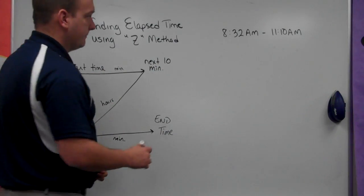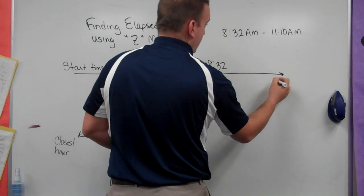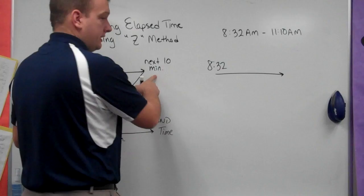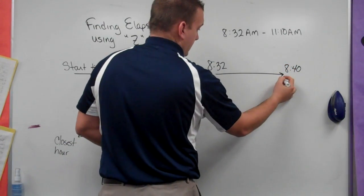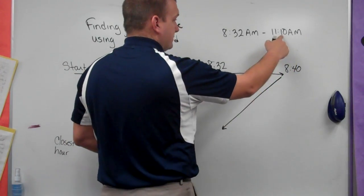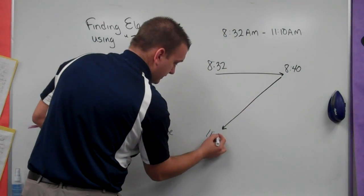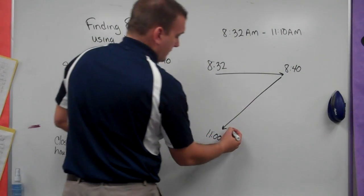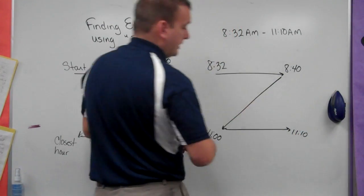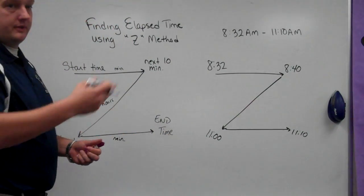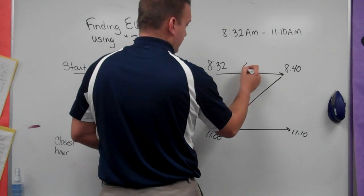Let's look at this example here. My start time is 8:32 a.m., and I'm going to go to the next 10 minute mark. That would be 8:40. Then, I come down. The next closest hour to my finishing time is 11 a.m. Then, my ending time is 11:10 a.m. Now, I just go back through the Z again and calculate the minutes and the hours. I have 8:32 to 8:40. That's eight minutes.